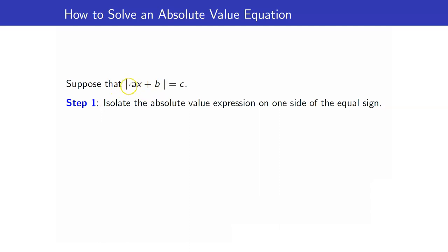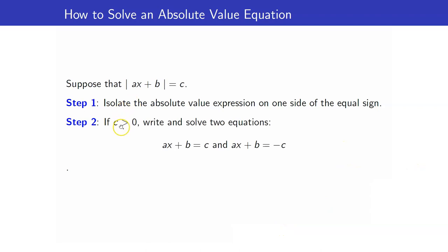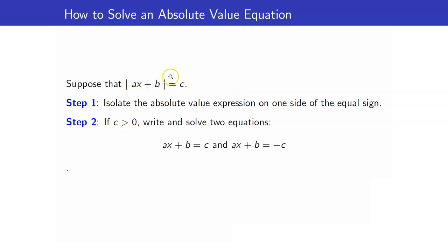How do we solve an absolute value equation? Suppose we are given the absolute value of a linear expression equals c. The first thing we need to do is isolate the absolute value expression on one side of the equal sign, so that we can apply the properties we studied. If c is positive, we equate the expression inside to c or to negative c — removing the absolute value sign and producing two equations.